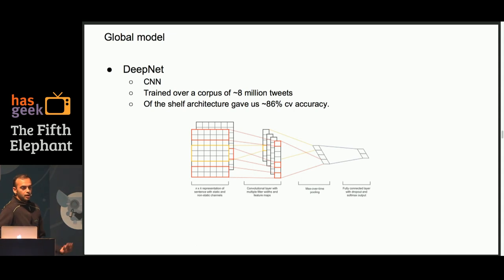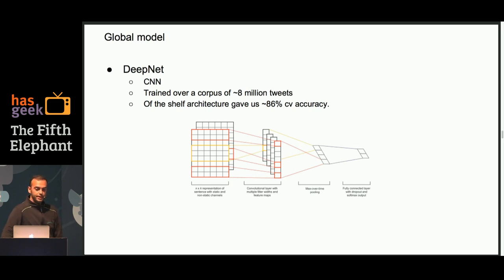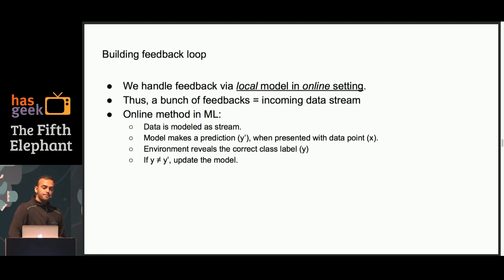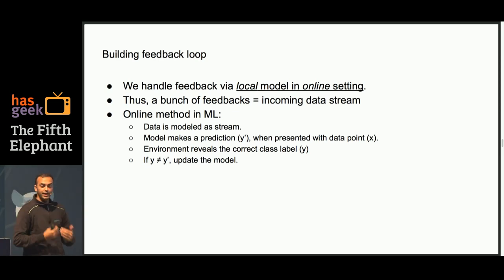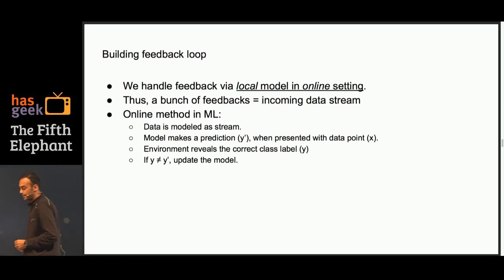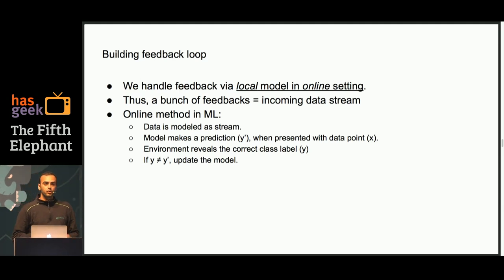The global model is a deep learning CNN — we tried both 1D and 2D nets. Right off the shelf architecture gives us 86 percent cross-validation accuracy, built on a huge corpus. We don't intend to keep updating this model often. The feedback loop models data as a stream: it comes in, the model predicts a label, then we wait for a human oracle — the person working the system — to give us feedback on whether the prediction was correct. The moment the environment reveals the correct label, we incorporate and update the model.